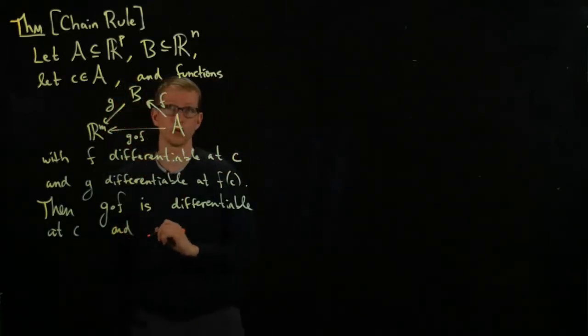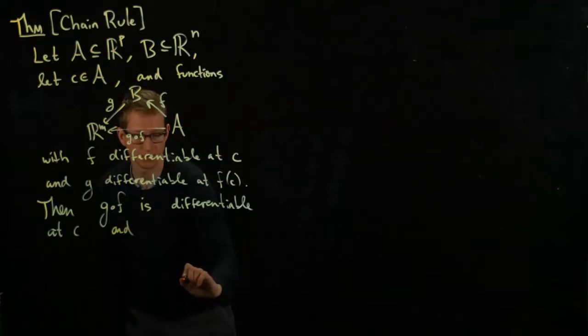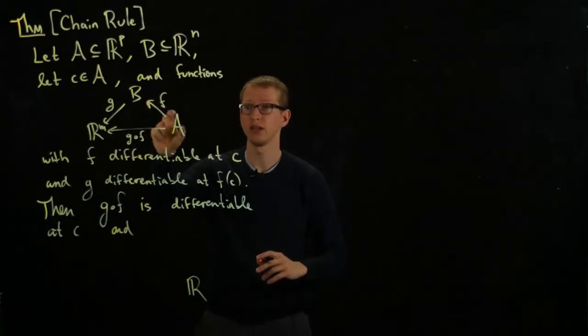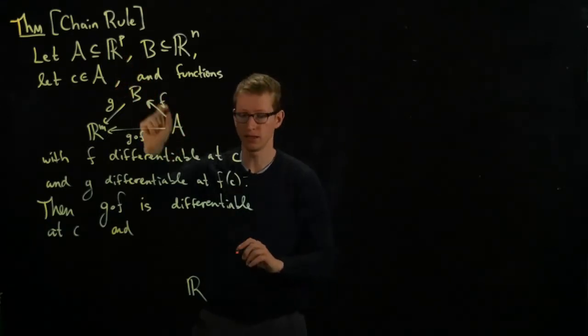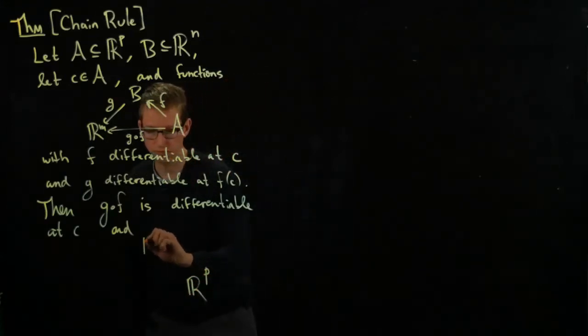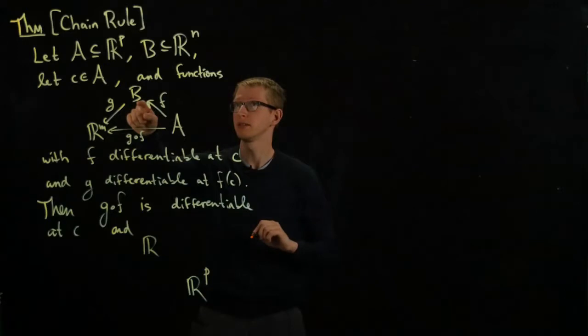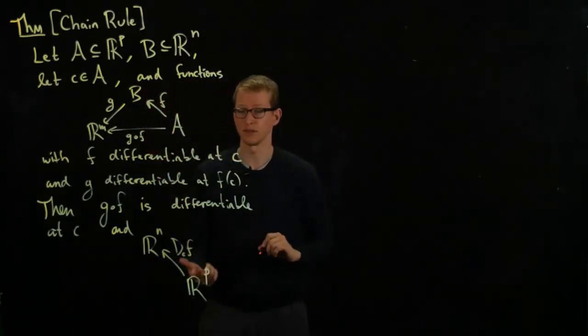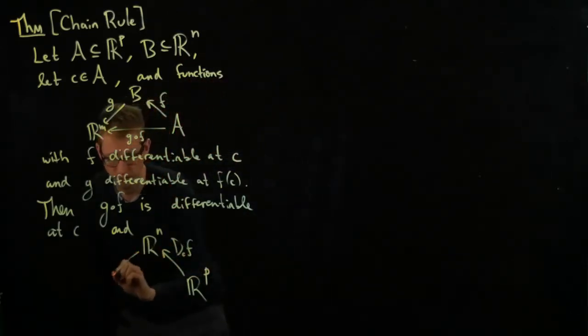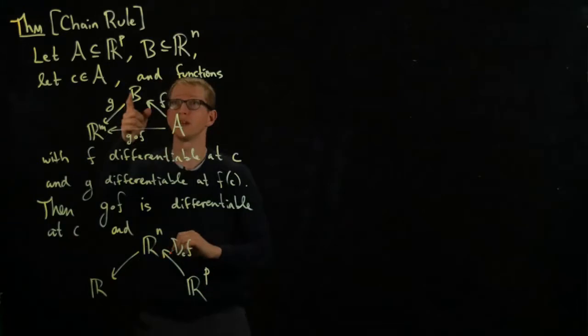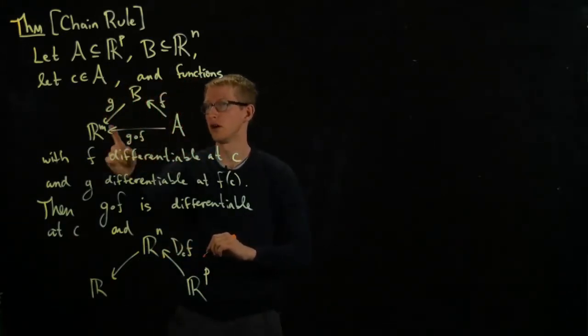This explicit formula is given by—let's think about the derivative of F. A is a subset of R^P, so the domain of the differential is R^P and its codomain is R^N. We have this differential of F at C because F is differentiable, and we also have the derivative of G. The codomain of G is R^M.